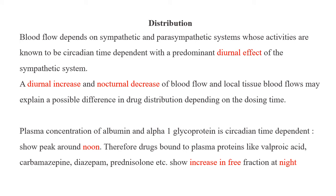For distribution, blood flow depends on the sympathetic and parasympathetic systems, whose activities are known to be circadian time-dependent, with predominant diurnal effect of the sympathetic system. A diurnal increase and nocturnal decrease in blood flow and local tissue blood flow may explain drug distribution differences depending on dosing time. Plasma concentrations of albumin and alpha-1 glycoprotein show circadian time-dependent peaks around noon; therefore, drugs like valproic acid, carbamazepine, and diazepam have increased free fraction at night.